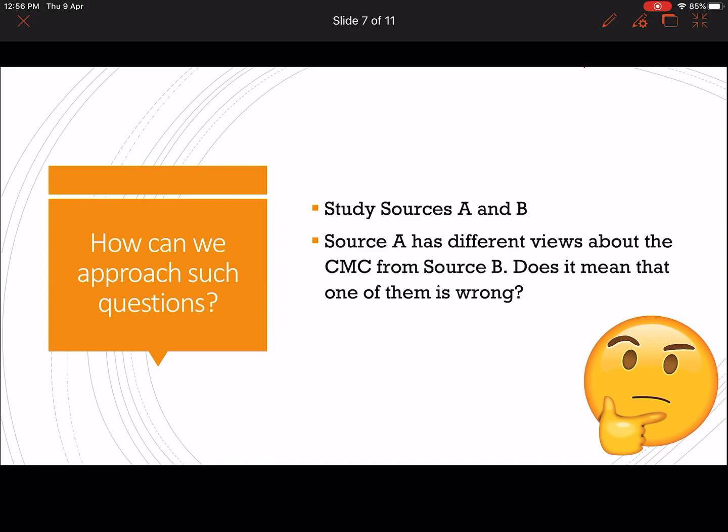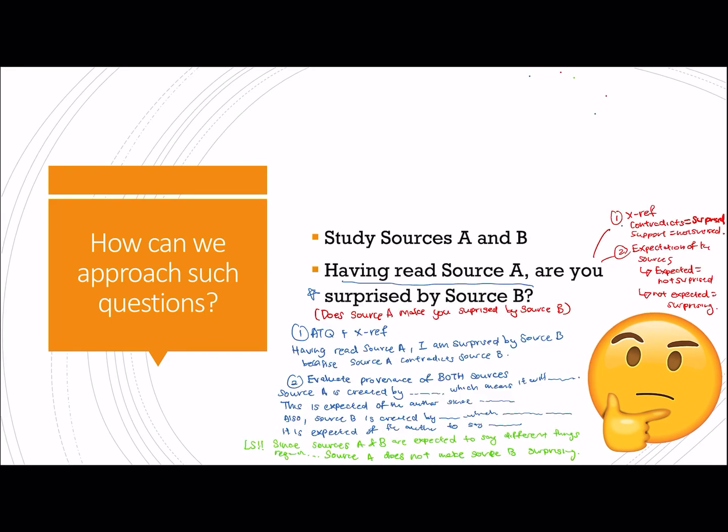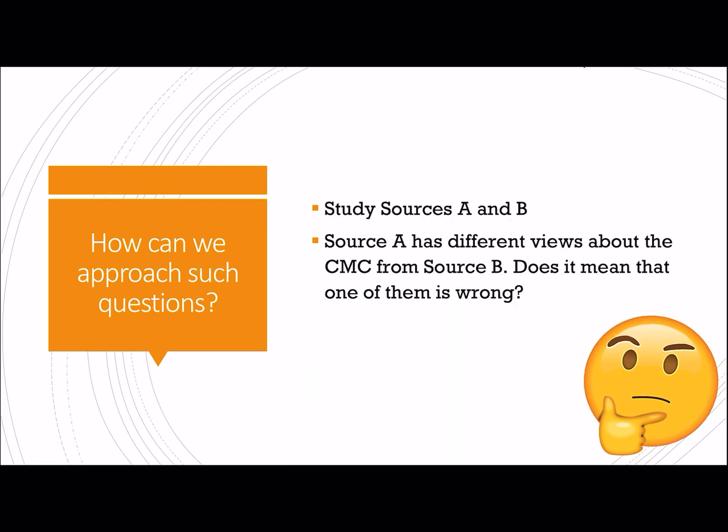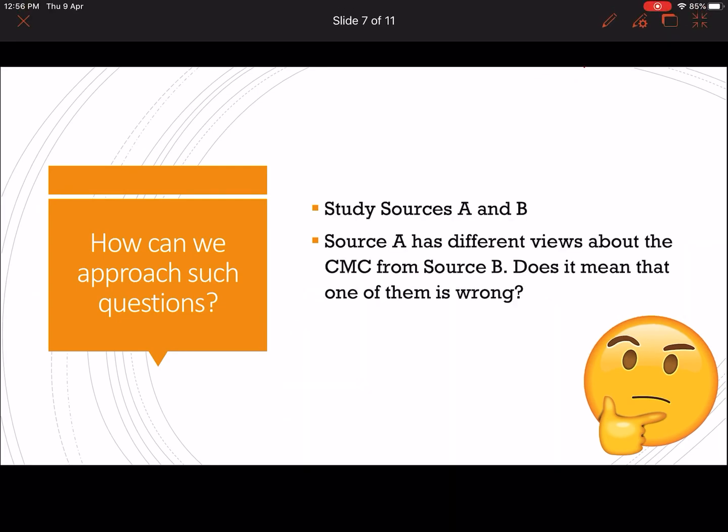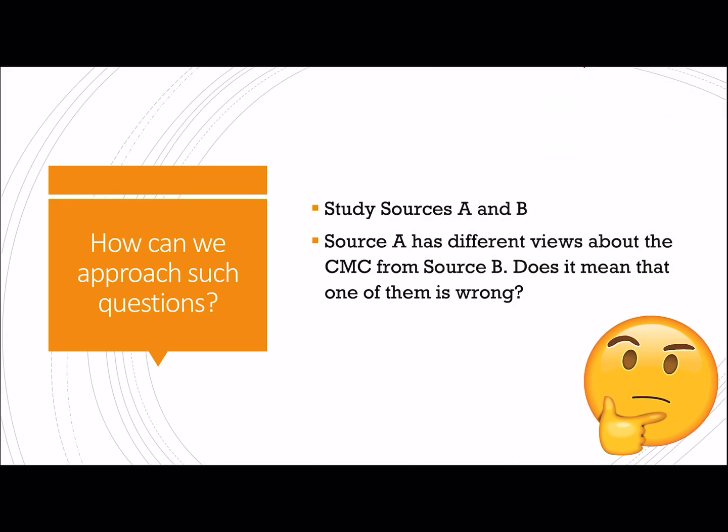This question is a little different compared to the other few sources because this question has already established the assumption for us. They have already let us know that source A and source B are different. So now they are telling you that yes, I am aware that source A contradicts source B. But does this really mean that one of the sources is wrong?